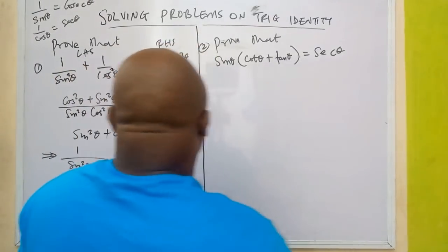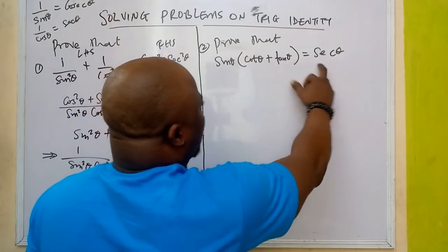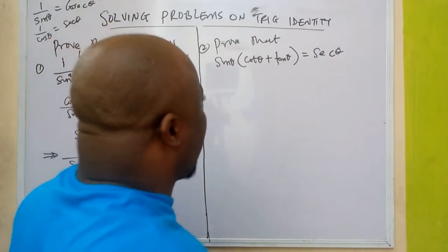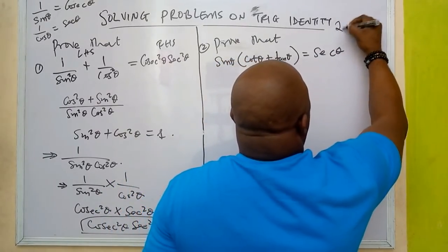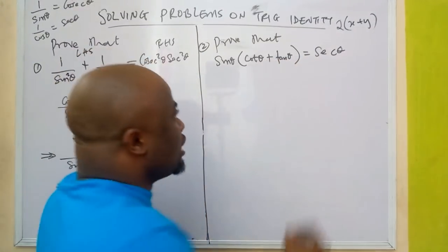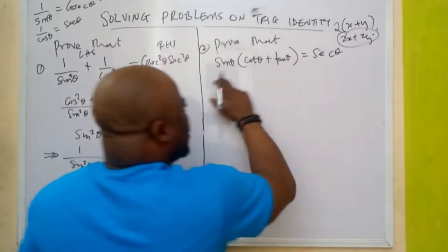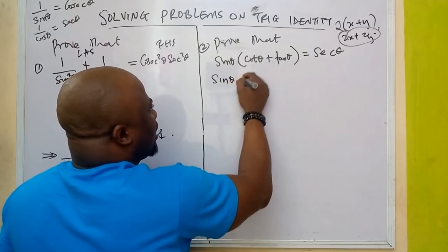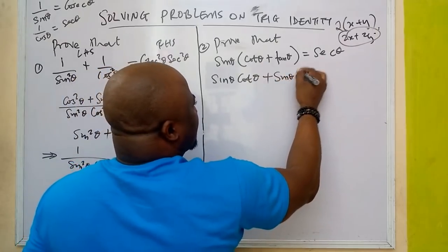Now let's go to question 2. Question 2 states: prove that sinθ(cosθ + tanθ) = secθ. We are still going to apply our normal elementary school math. We are going to open the bracket — just like if you have 2(x + y) you get 2x + 2y. So sinθ times the bracket gives sine θ · cosθ + sinθ · tanθ.